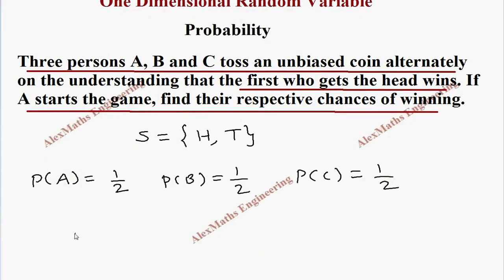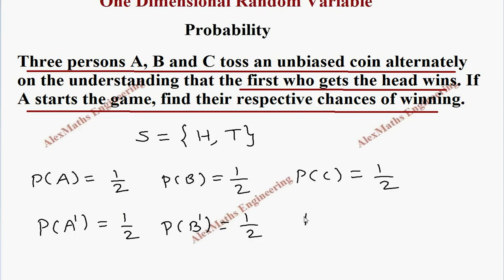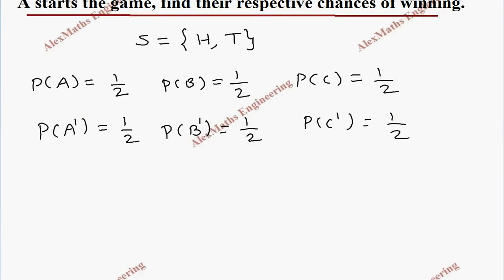And not getting head is P of A dash, which is 1 minus 1 by 2, which is again 1 by 2. In the same way, P of B dash is also 1 by 2, and P of C dash is also 1 by 2.